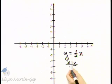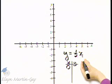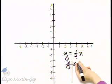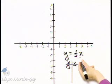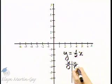For example, what if we let x be zero? If x is zero, y equals one-half times zero, and one-half times zero is zero.